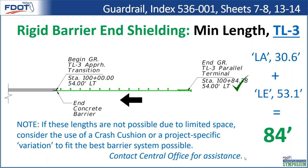Similar to the CRT system, if these lengths are not possible due to limited space, consider something shorter — a crash cushion may fit where a lengthy approach terminal won't, or a project-specific variation. If the standards simply don't fit your project — for example, you have the end of a bridge, a canal, and then immediately a driveway or side street, a parking lot, or a railroad crossing very close to the bridge — those unique cases can be difficult. Please contact Central Office for assistance when you need to use something non-standard.